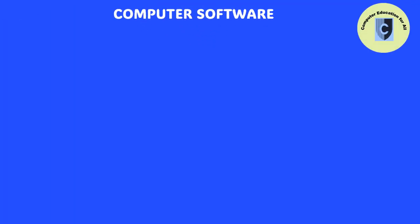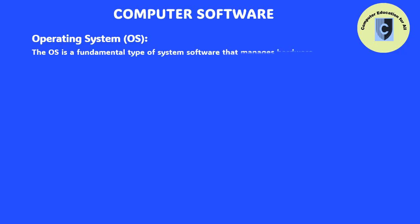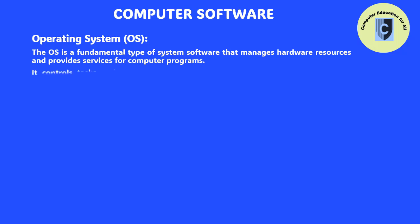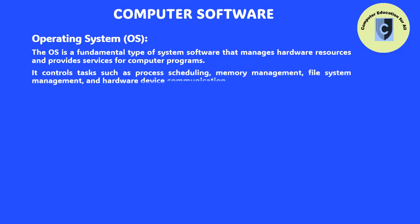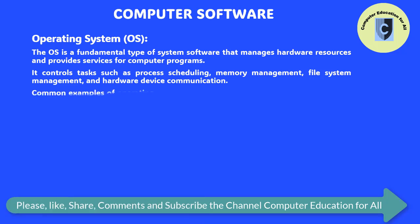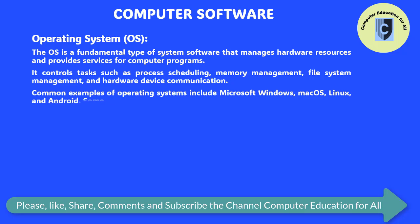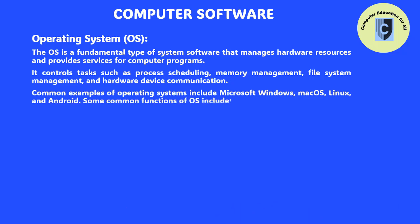Operating System (OS): The operating system is a fundamental type of system software that manages hardware resources and provides services for computer programs. It controls tasks such as process scheduling, memory management, file system management, and hardware device communication. Common examples of operating systems include Microsoft Windows, MacOS, Linux, and Android.